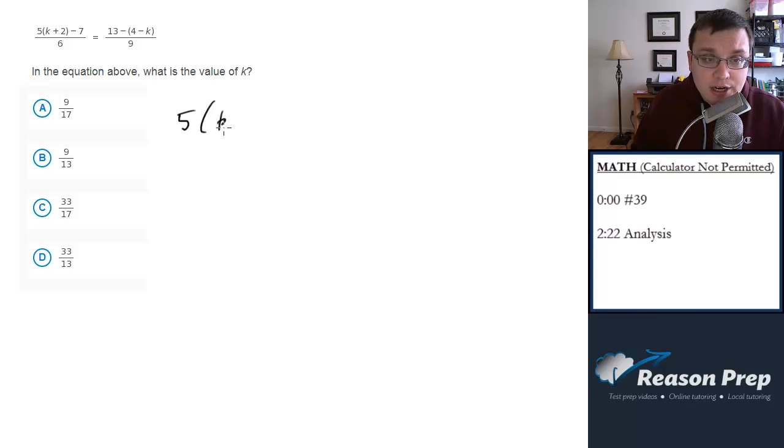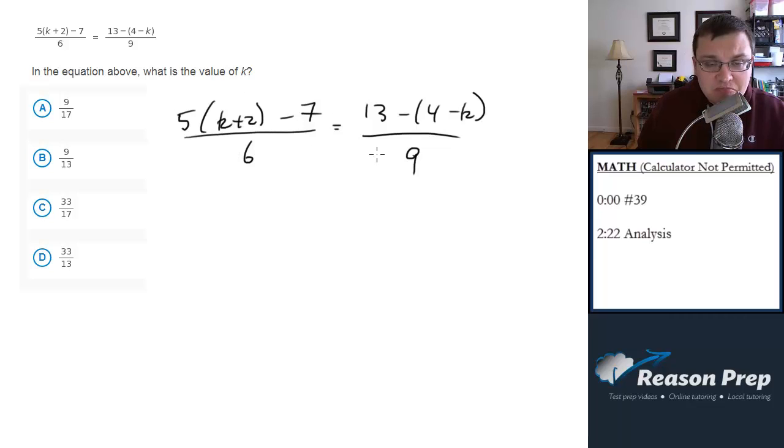So let's write our equation out here. We could either multiply both sides by some common multiple, like 54 perhaps, or we can cross multiply. And I'm going to do the cross multiply method just because I think it's a little bit easier. So 9 times this stuff, so 9 times 5 will be 45 times k plus 2 minus 9 times 7 is 6 times 63.